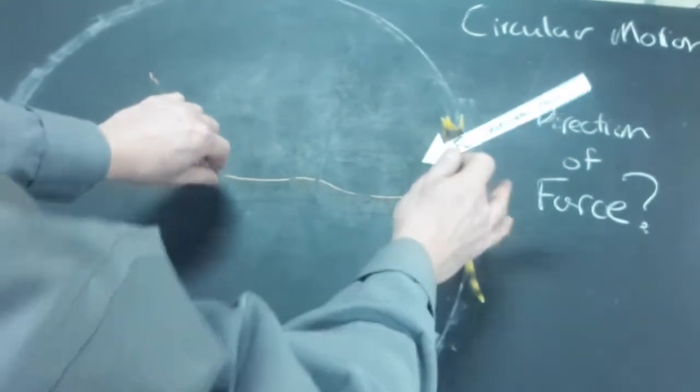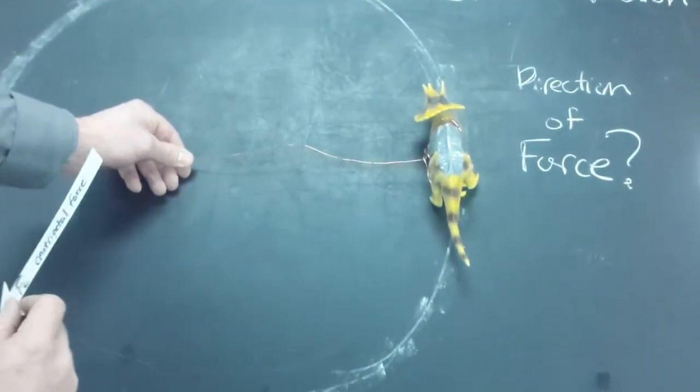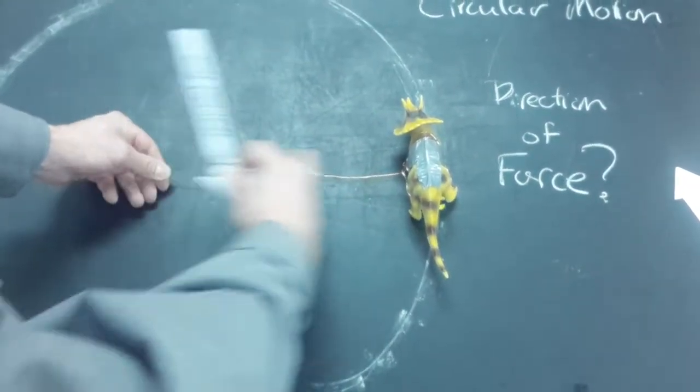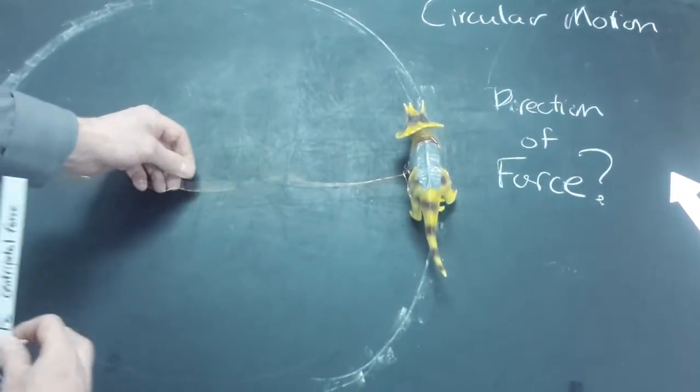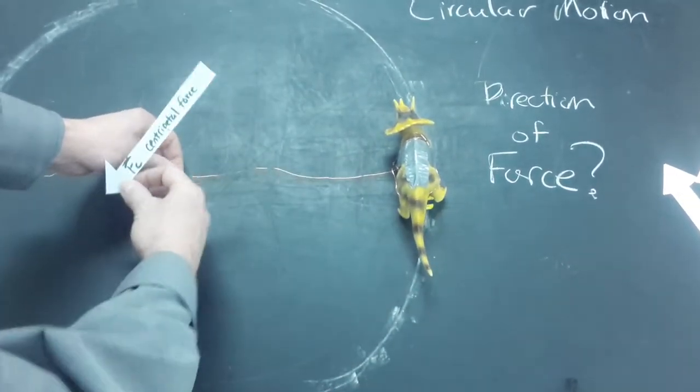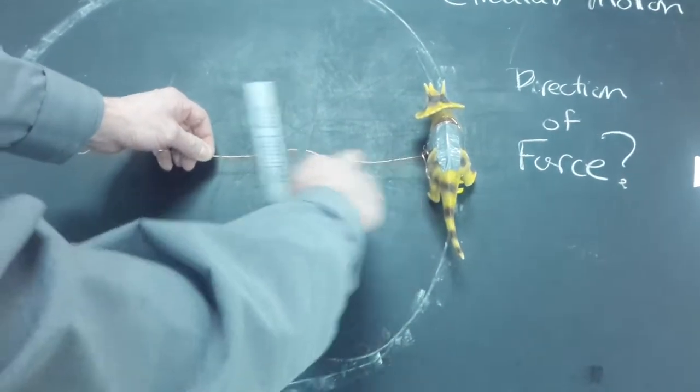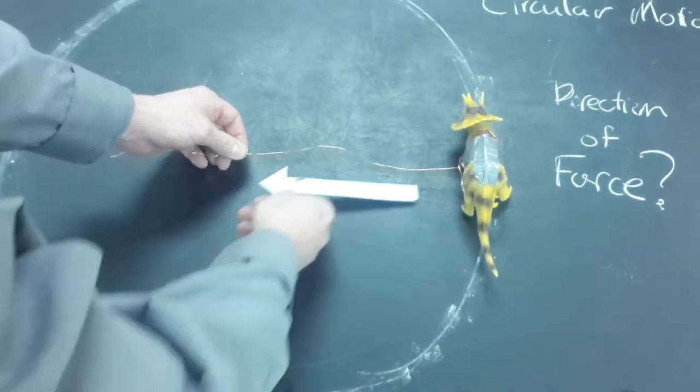But really the simplest thing to say is the only unbalanced force acting on this dinosaur to keep it in a circular is being provided by tension, which is being provided by this wire or this string. And so the force is always directed exactly towards the middle. So it's actually that simple. There's only one force, and it's always acting at the center.